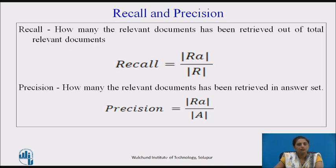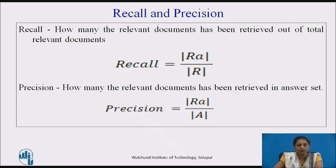Let us recall the definitions of recall and precision. Recall is: how many relevant documents have been retrieved out of the total relevant documents? And precision is: how many relevant documents have been retrieved in the answer set?